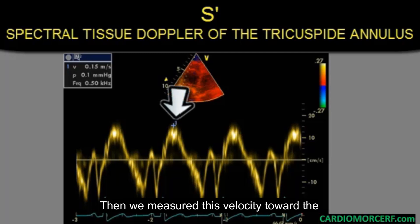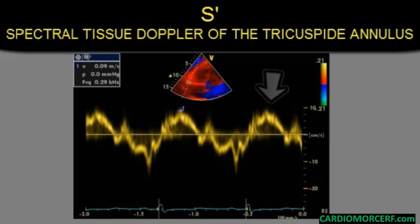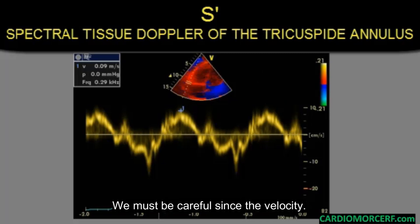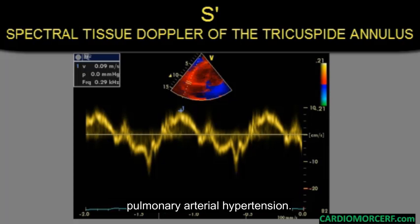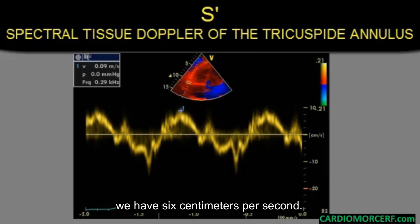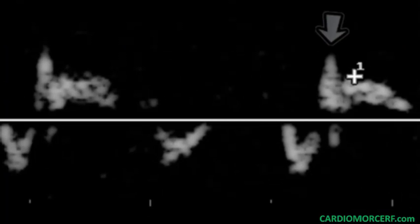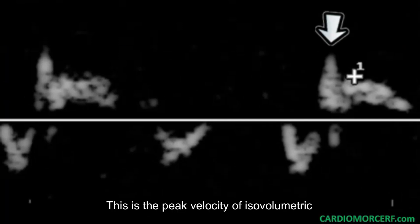We measured this velocity toward the apex at which the tricuspid annulus moves. In this patient, we have 9 centimeters per second, indicating ventricular dysfunction. We must be careful since the S prime velocity also decreases when there is pulmonary arterial hypertension — it is very sensitive to afterload. Here we have 6 centimeters per second, which is quite abnormal. Do not forget that S prime is not the first highest velocity seen here; this is the peak velocity of isovolumetric contraction.